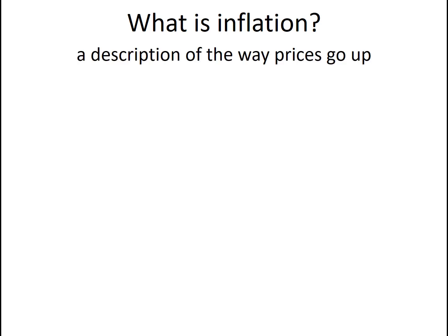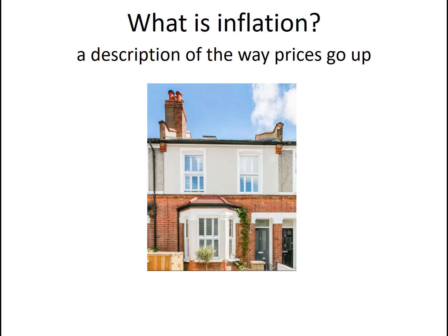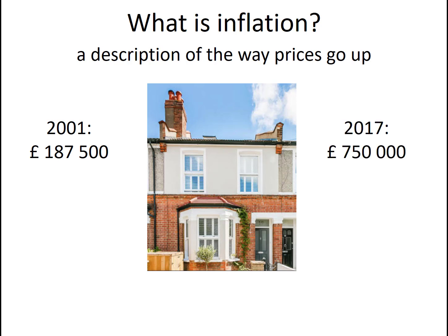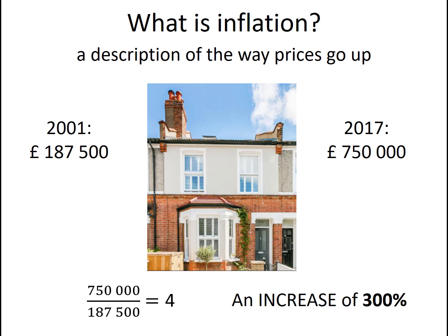Inflation — what's it all about? It's basically a numerical description of the way prices go up. There's lots in the news at the time this has been recorded about the exorbitant price of houses in the southeast and elsewhere in the country. If you had wanted to buy this house back in 2001, you could have found it in the estate agent advertised at around this price here. By this year, it had gone up quite a lot to £750,000. That represents an increase in price of 300% over 16 years.